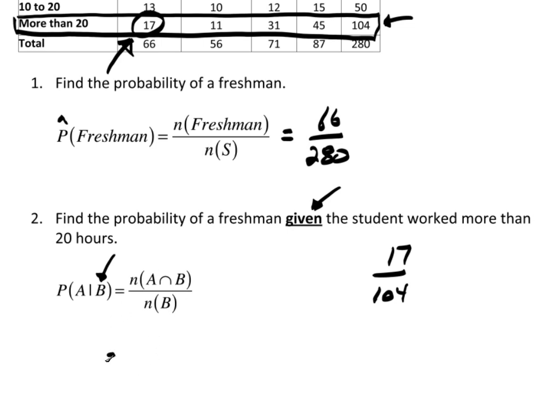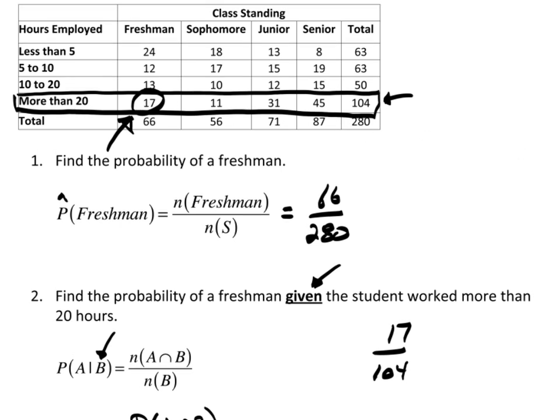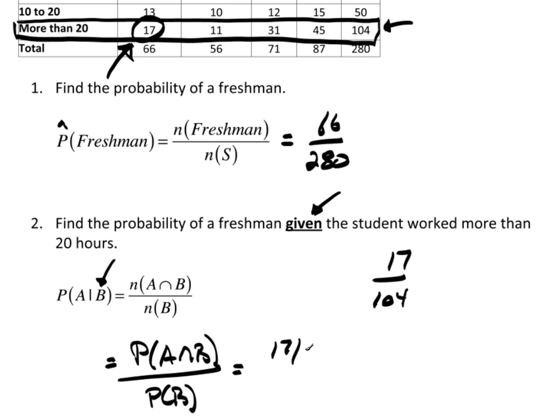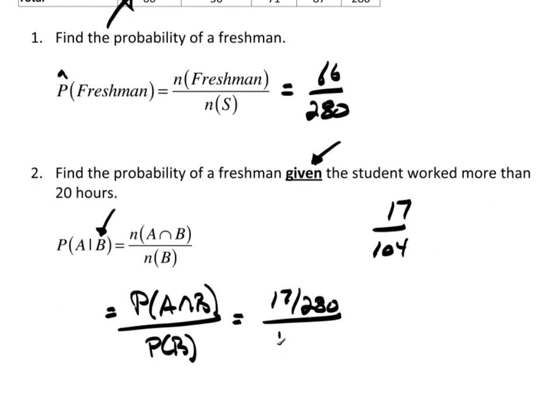We can also think of this as being the probability of A and B divided by the probability of B. This will work out because the probability of A and B. Let's go back to the table. Well, A and B is 17. So, how many qualify for both A and B out of the whole group? That's 17 out of 280. Now, what's the probability of B happening? Well, B was more than 20. That's 104 out of 280. The 280s cancel and I'm right back to 17 over 104.